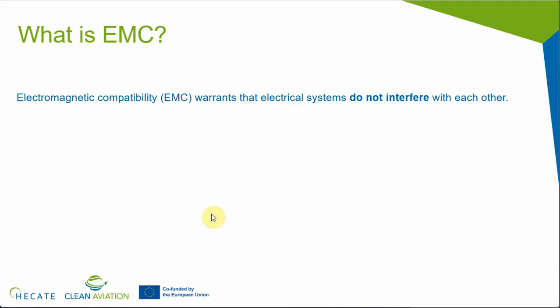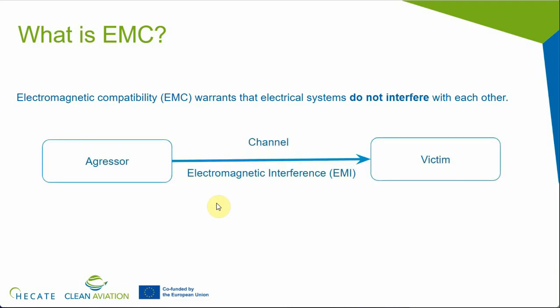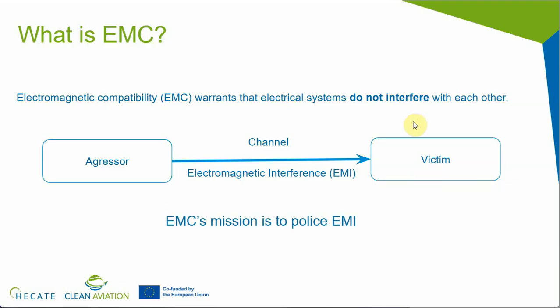So the first question we may ask is: what is EMC? EMC stands for electromagnetic compatibility, and the purpose of EMC is to warrant that electrical systems do not interfere with each other. In a schematic manner, we have an aggressor — a system creating some kind of electromagnetic interference — which can affect a victim equipment. For this to happen there must be a channel, which is like the vehicle that goes from the aggressor to the victim. Another way of putting it is that EMC's mission is to police electromagnetic interference, putting order in the electromagnetic spectrum so there are no unintended interferences between equipment.